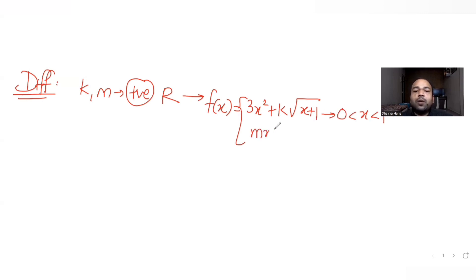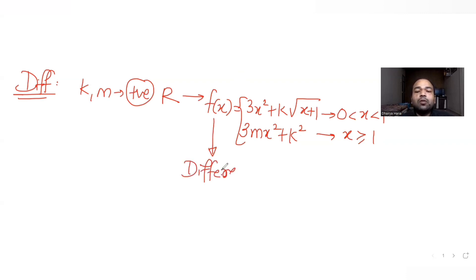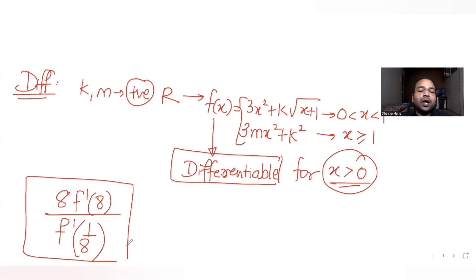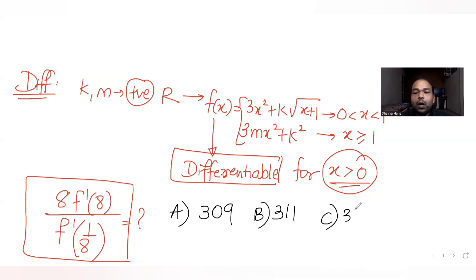And f of x is also equal to 3mx squared plus k squared for values of x greater than 1. We have been told that this function f of x is differentiable for all x greater than 0. We have been asked to find the value of 8 times f dash of 8 divided by f dash of 1/8. The four options given are 309, 311, 315, and 317.